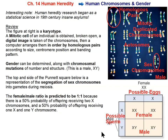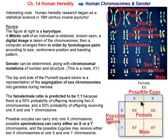Which parent determines the sex of the child? Possible oocytes can only carry an X chromosome, because that's all the female has. Sperm, on the other hand, can carry either an X or a Y chromosome — so it's the male or the sperm that determines the sex of the baby. There are other systems of sex determination in other species. In insects and birds, for example, it can be the female that has two different sex chromosomes instead of the male.